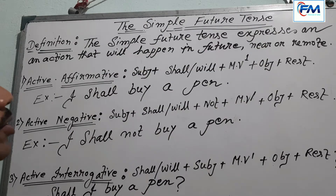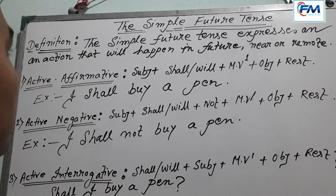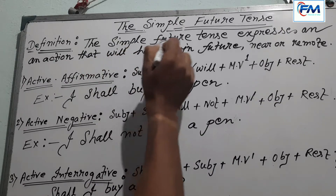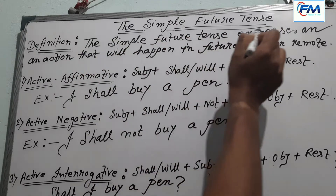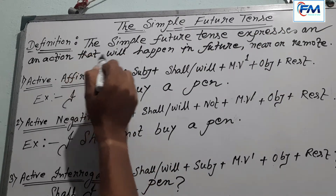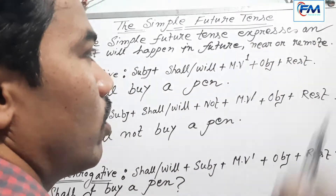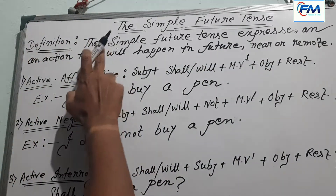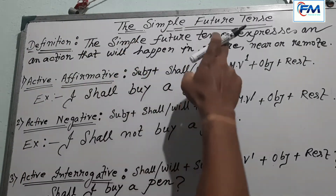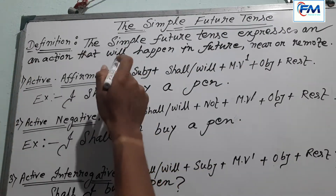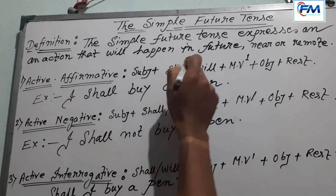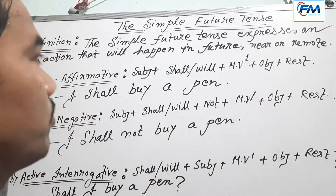The simple future tense. What is the definition of the simple future tense? The definition of simple future tense is that the simple future tense expresses an action that will happen in future, near or remote.